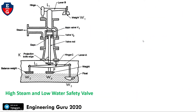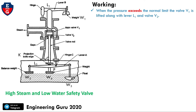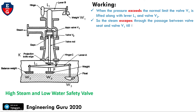Now we will see the working of this safety valve. When the pressure exceeds the normal valve limit, valve V1 is lifted along with lever L1 and valve V2. When the pressure exceeds the design limit, steam escapes through the passage between the valve seat and valve V1, until the pressure returns to normal.